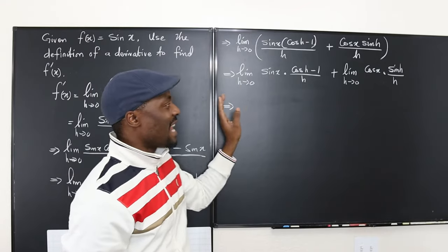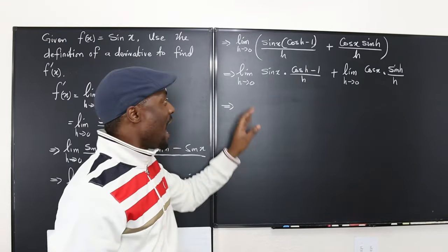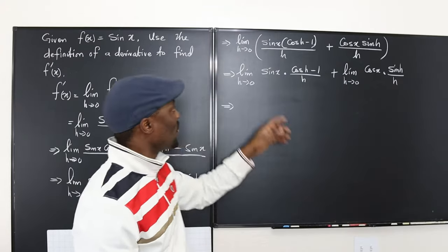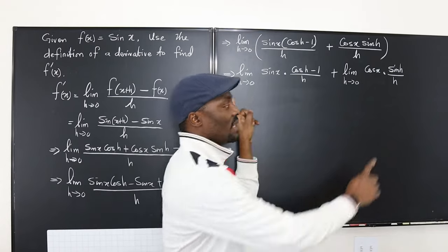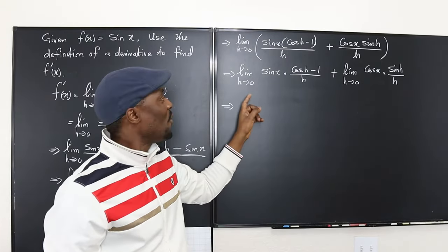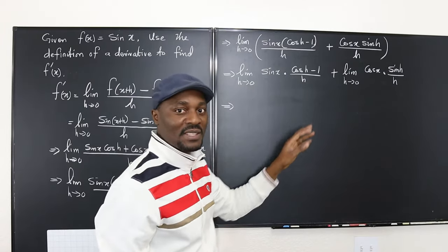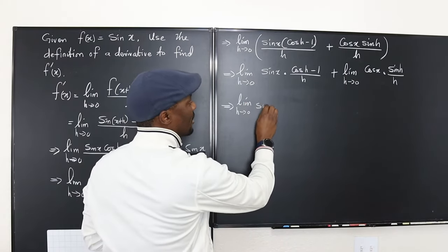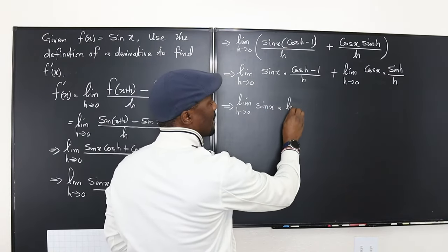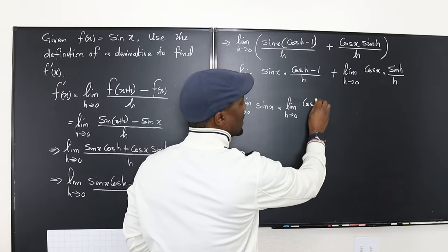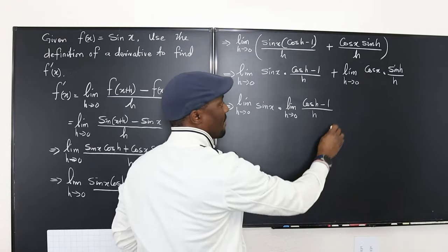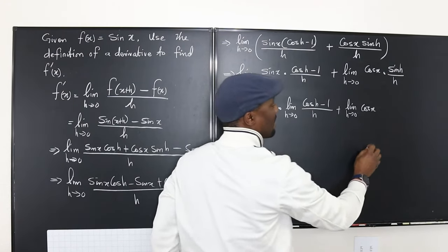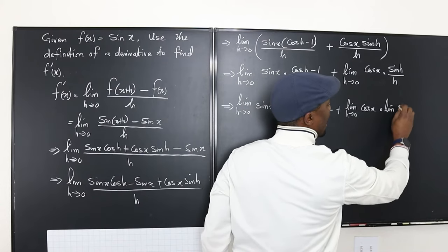Now I apply the product law — the limit of a product is the product of the limits. So this becomes: the limit as h→0 of sine x, multiplied by the limit as h→0 of (cosine h − 1)/h, plus the limit as h→0 of cosine x, multiplied by the limit as h→0 of sine h over h.